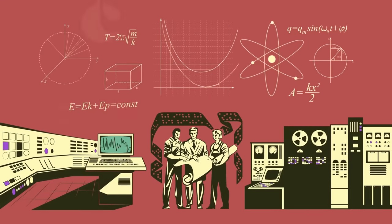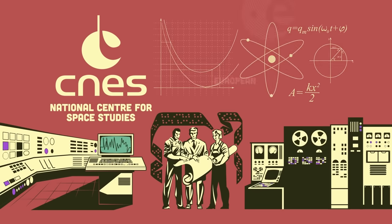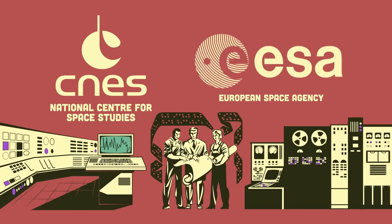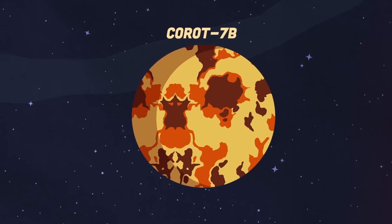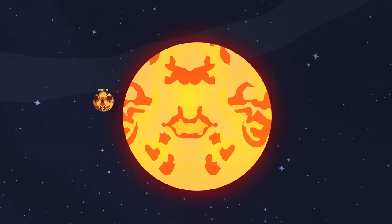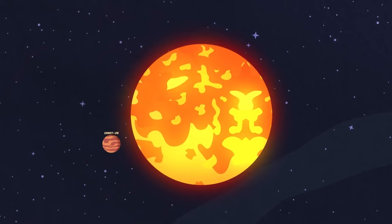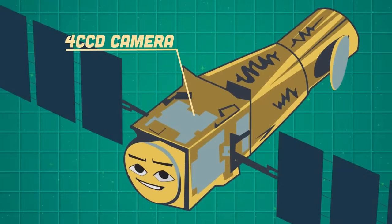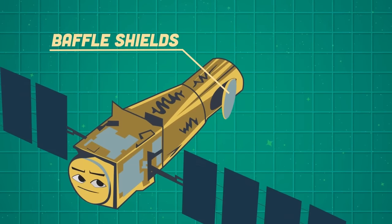I was operated by the French CNES Space Agency, which means the National Center for Space Studies, and also by the European Space Agency (ESA). One of my major finds was Super Earth CARO-7b, an exoplanet orbiting the star CARO-7. Another discovery was CARO-2b, which orbits the star CARO-2. Here's my 4-CCD camera and electronics. My baffle shielded the telescope from extraneous light.